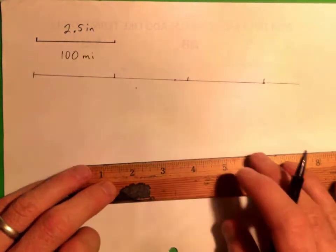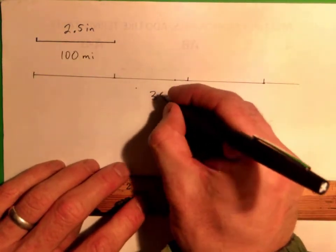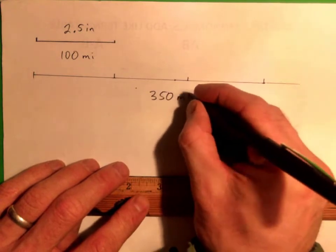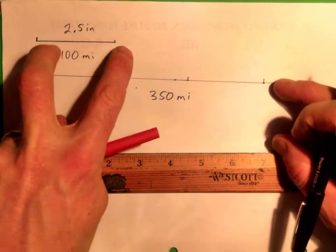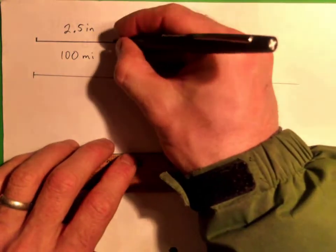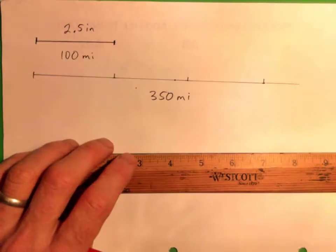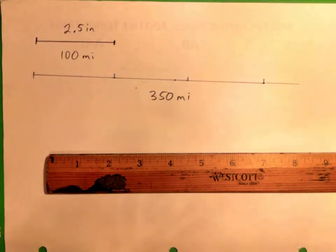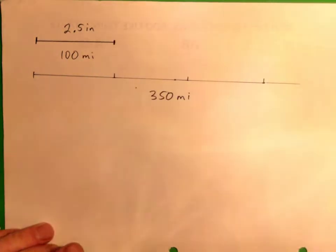So in other words, you can imagine 350 miles would be like over three times the distance, right? So there's a number of ways to do this. We could do a proportion.